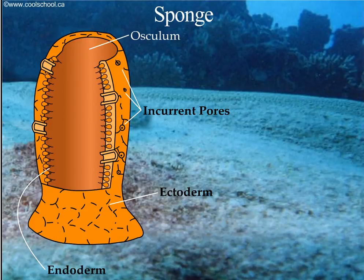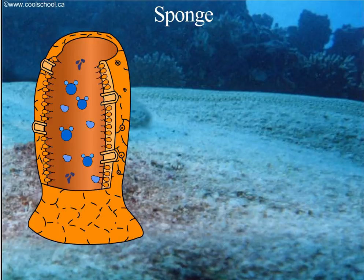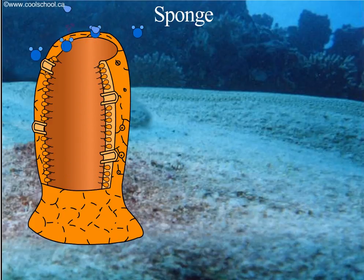They also have one excurrent pore called an osculum. The osculum gets rid of waste, water, and carbon dioxide, and acts as a simple excretory system.